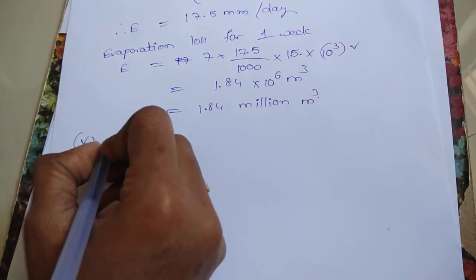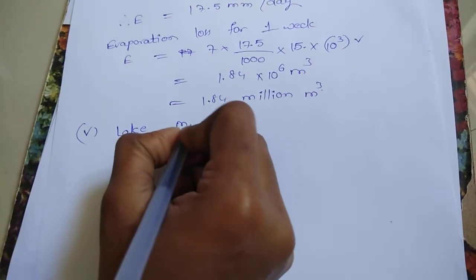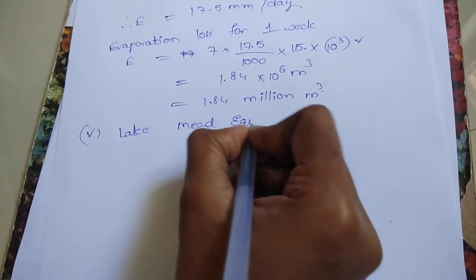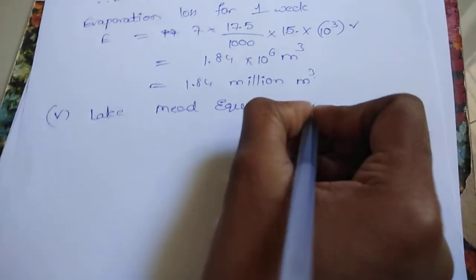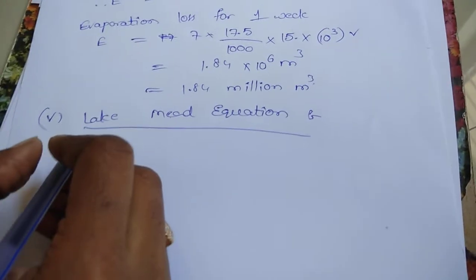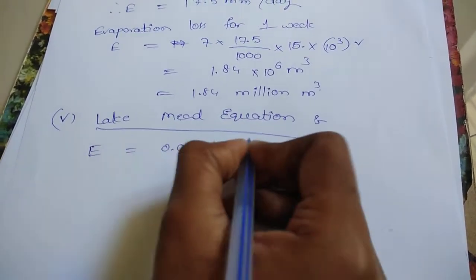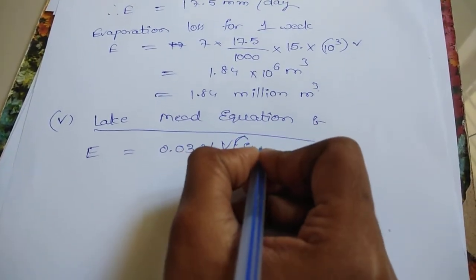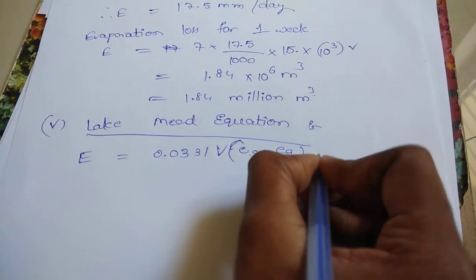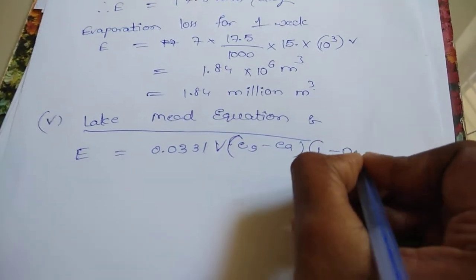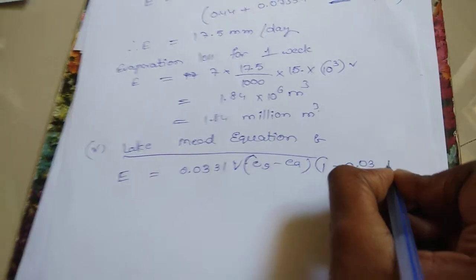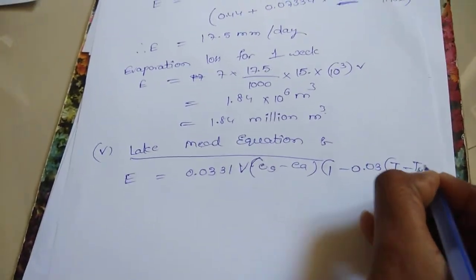So, the last equation is Lake-Mudd equation. The formula is E equal to 0.0331 into V into ES minus EA into 1 minus 0.03 into TA minus TW.